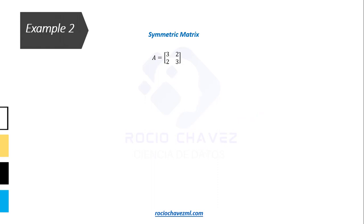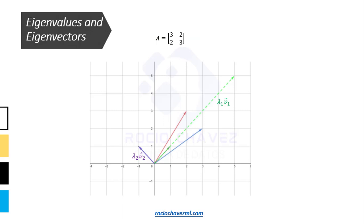Let's quickly see an example with a symmetric matrix. Here we have its eigenvalues and eigenvectors. We place them on the Cartesian plane. At the first glance, we can see that their eigenvectors are orthogonal, that is, they are perpendicular.